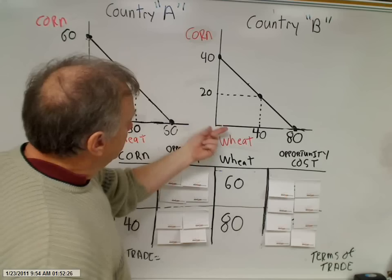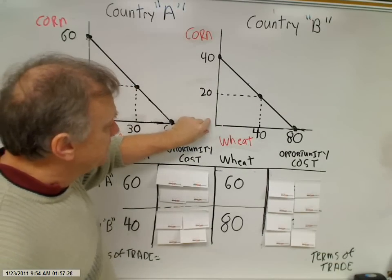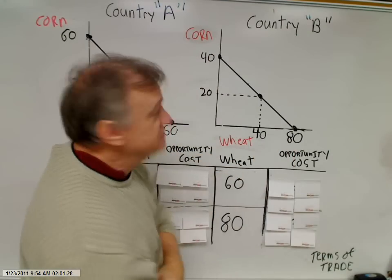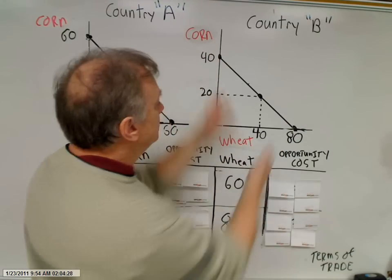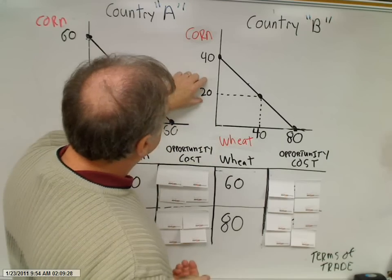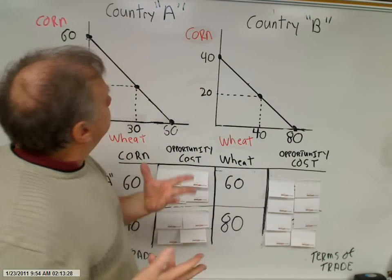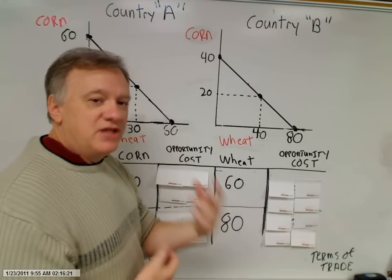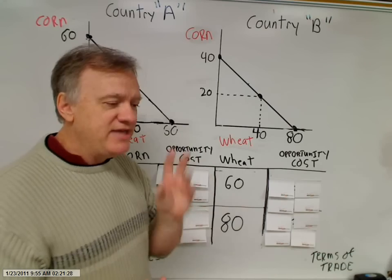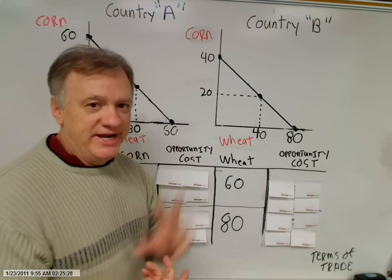Country B — same thing. All of their resources towards corn: 40 bushels of corn. All of their resources towards wheat: 80 bushels of wheat. Connect those two extreme points and we have our straight-line, constant-cost production possibilities frontier. They make the allocative efficiency decision to produce 20 bushels of corn and 40 bushels of wheat. Both countries are not trading — they're in closed economies, in a state of what's called autarky, spelled A-U-T-A-R-K-Y.